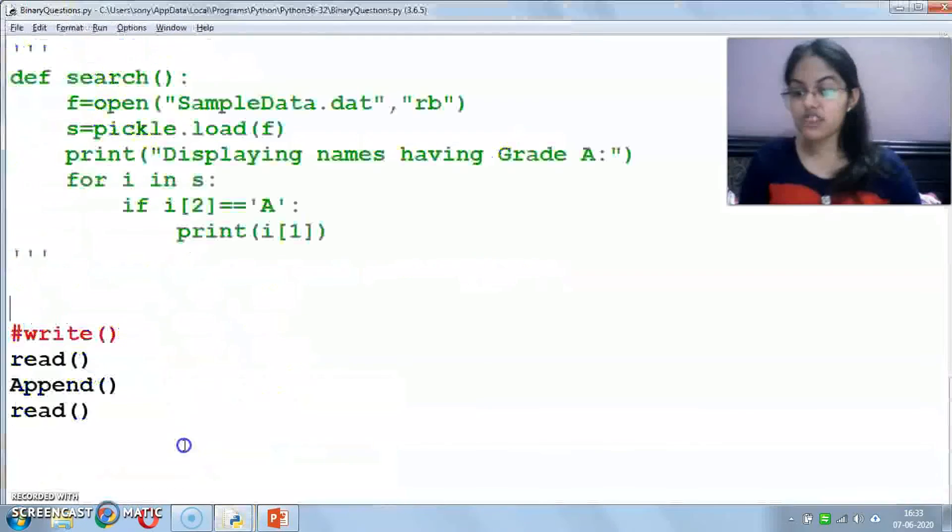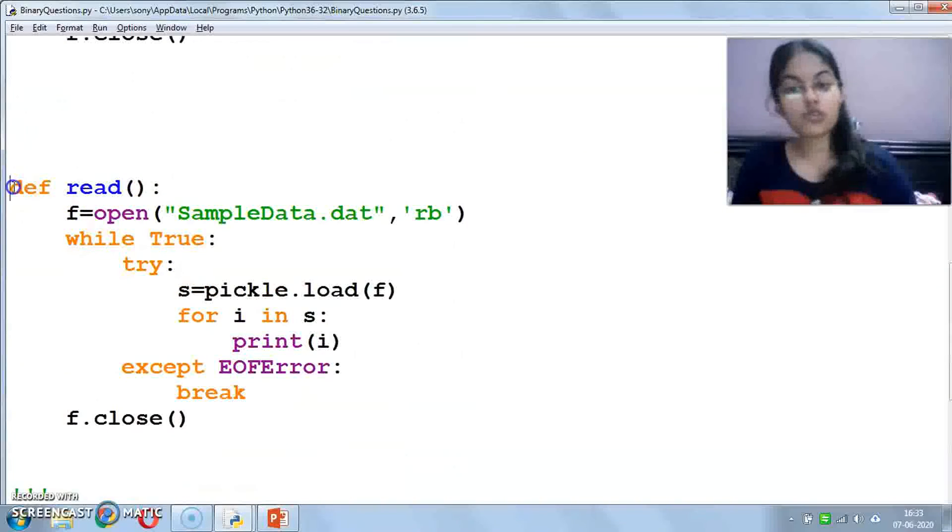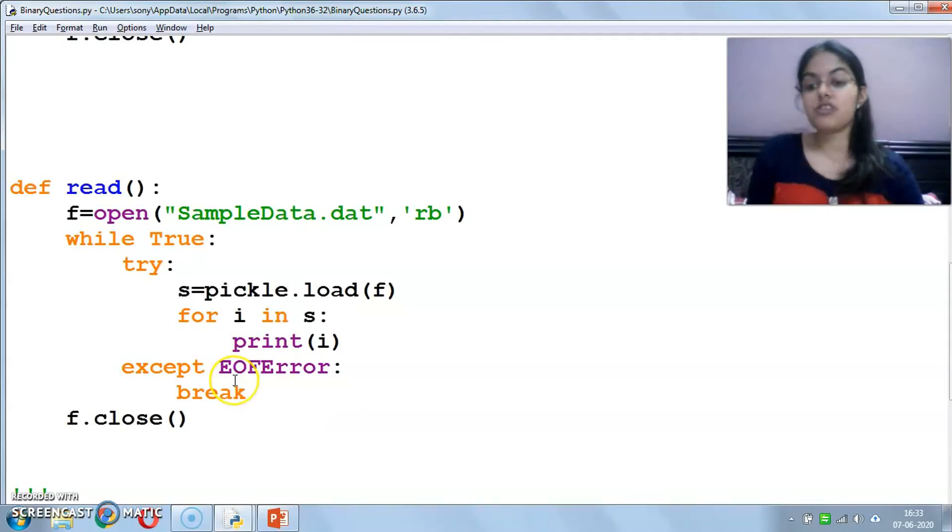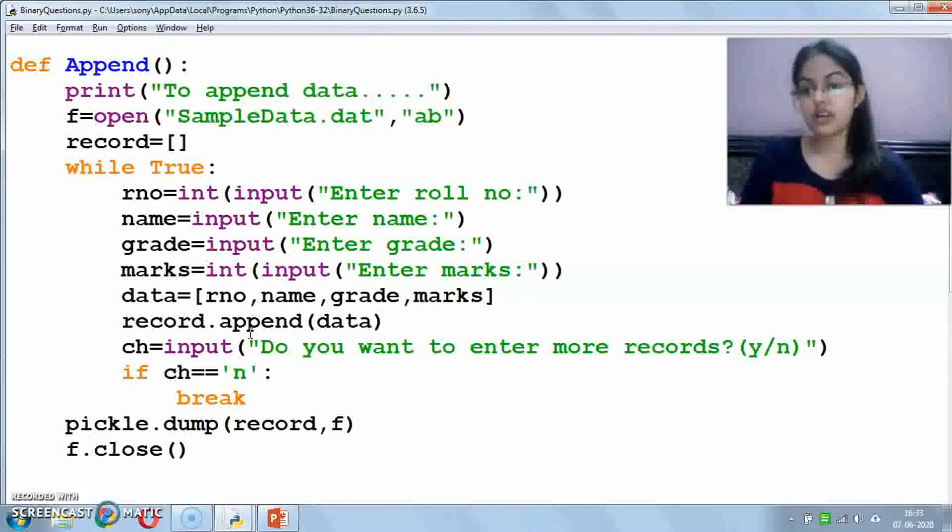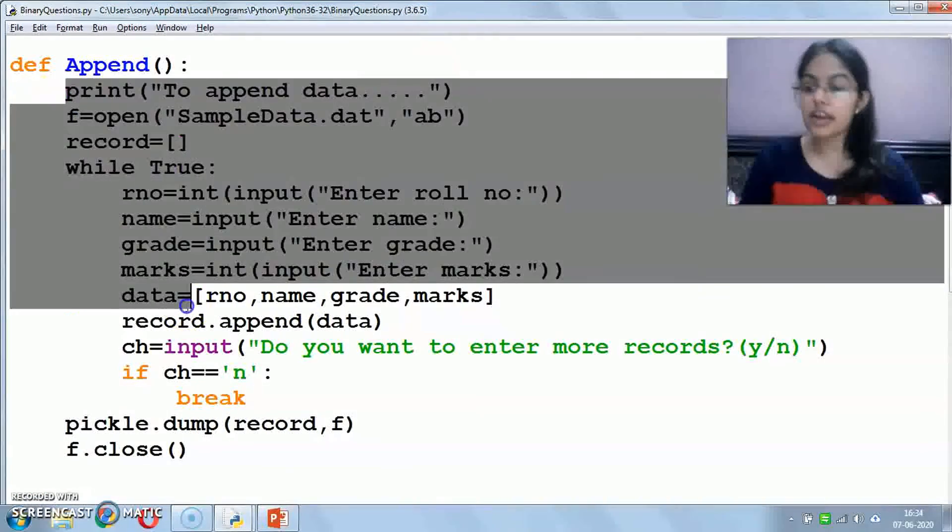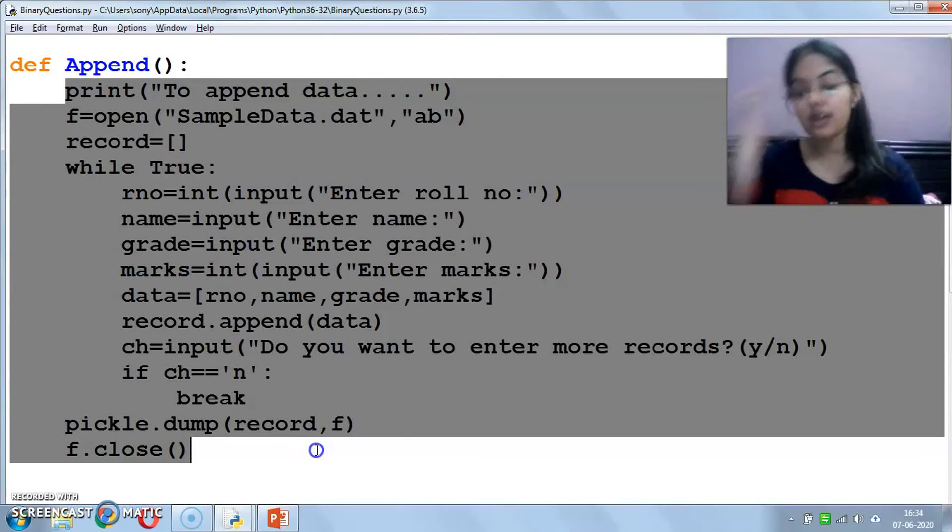And what have we just changed? The read function - we have modified it a little bit. Until the end of file is not reached, means as long as there are records in the file, it will read and display side by side. And in the append function, we have used AB mode. The rest of the process remains the same as in the writing case.